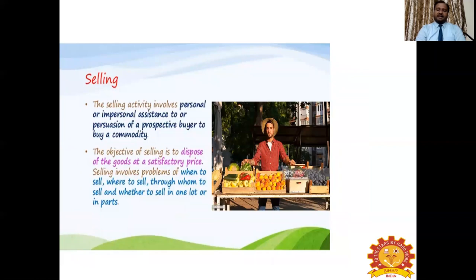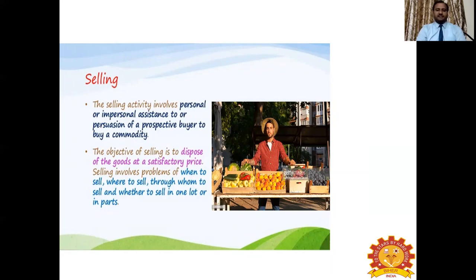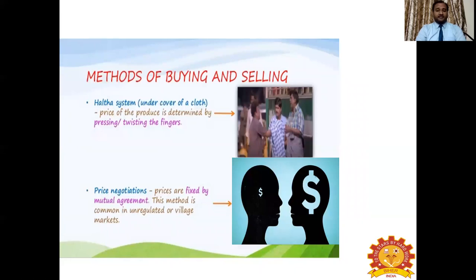The selling activity involves personal or impersonal assistance or persuasion of a prospective buyer to buy a commodity. The objective of selling is to dispose of goods at a satisfactory price — here the satisfaction is related to the seller, just as consumers have to be satisfied after every purchase, the seller also has to get satisfaction after every selling process. Selling involves problems of when to sell, where to sell, through whom to sell, and whether to sell in one lot or in parts.